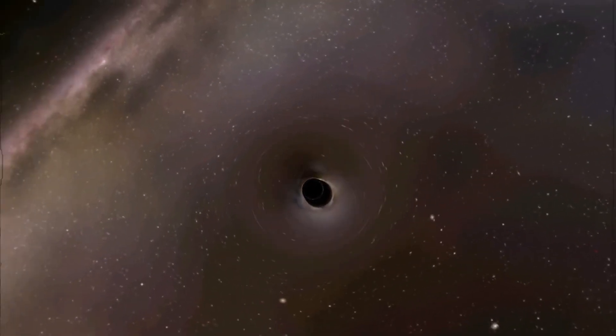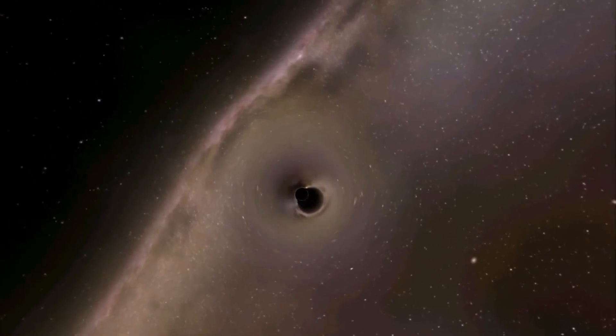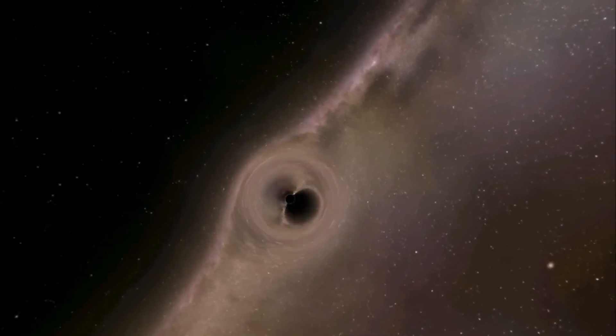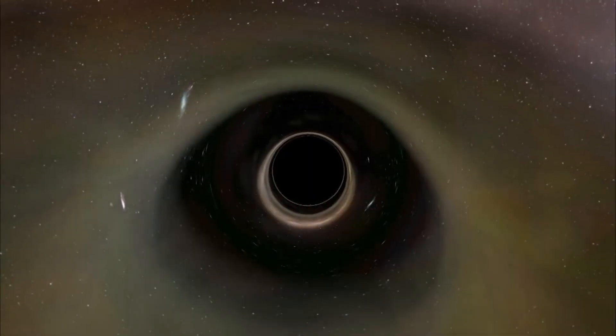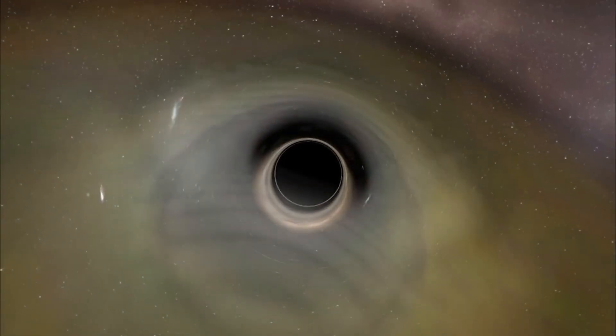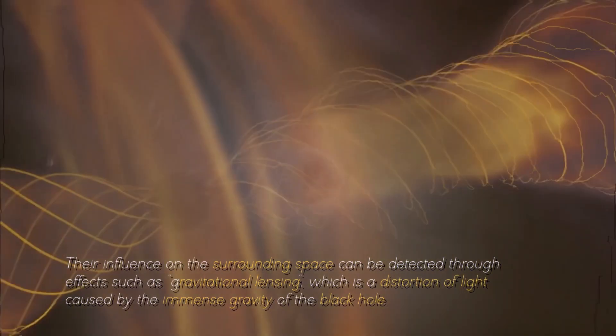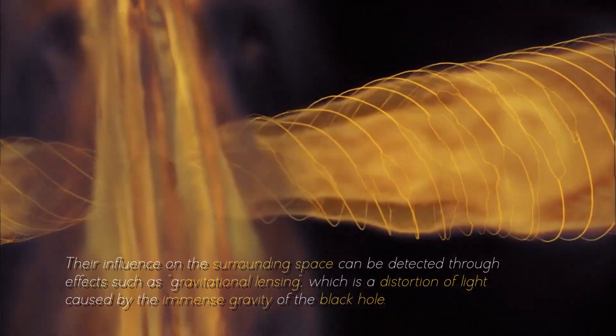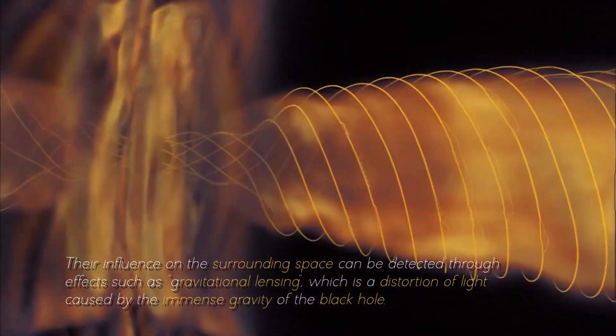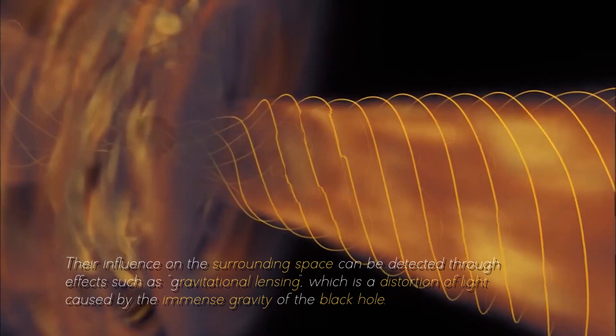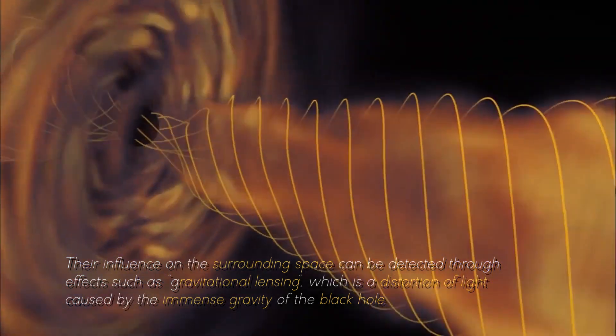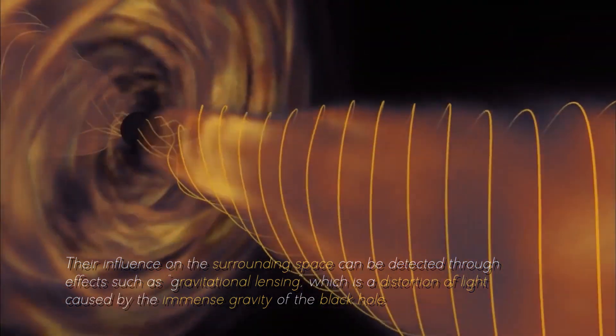The presence of an event horizon around black holes is what makes their direct study difficult, but this does not mean that it is completely impossible. Their influence on the surrounding space can be detected through effects such as gravitational lensing, which is a distortion of light caused by the immense gravity of the black hole.